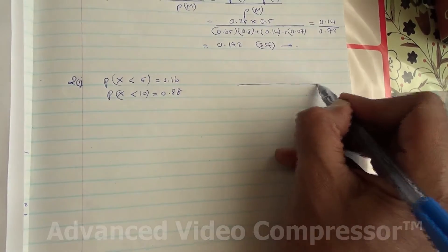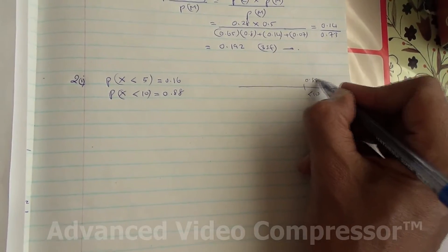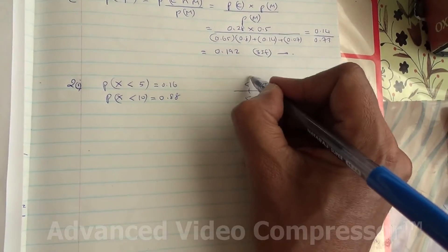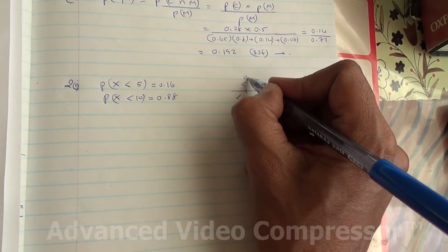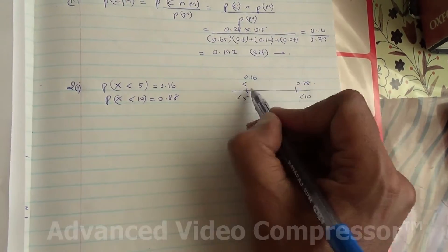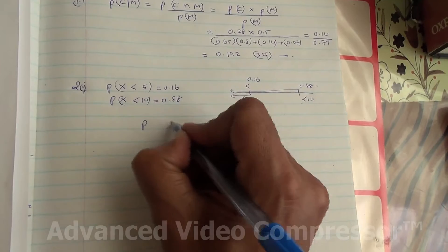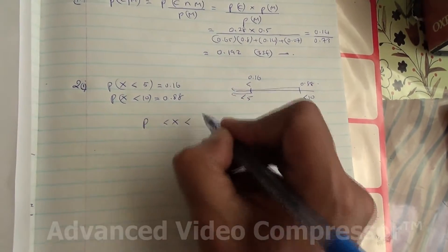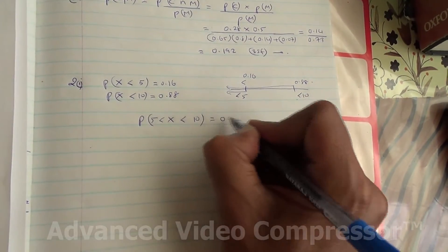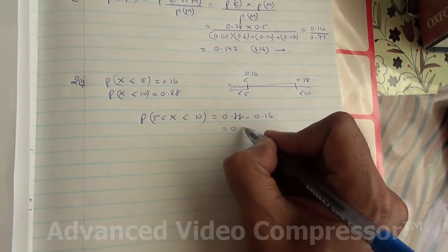Let's draw a line like this and put 10 here. Less than 10, the probability is 0.88, and less than 5, the probability is 0.16. If I want to find from here to here between these, I must take less than 10 minus less than 5. Therefore, the probability of X being between 5 and 10 is going to be 0.88 minus 0.16, which is basically 0.72.